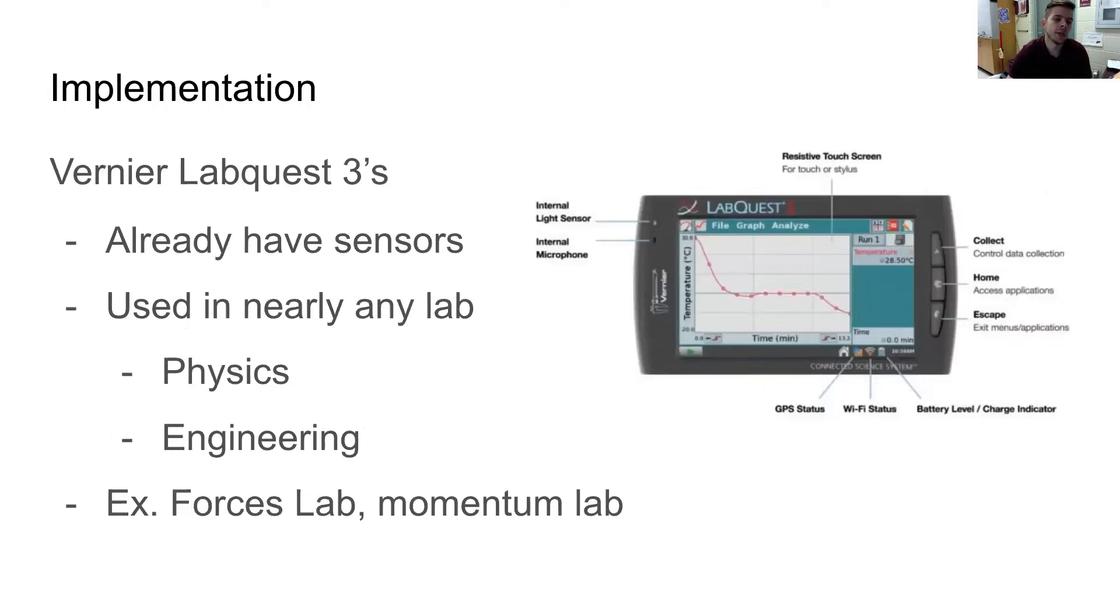So what I decided to do was buy something called Vernier LabQuest 3s. I already have sensors, but buying these opens up a new world because they're overwhelmingly more efficient. And we'll talk about how much more efficient a little bit later. I use these regularly in my physics classes, and I use them some in engineering.